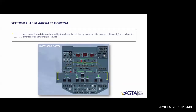Let's look at the overhead panel. By definition, the overhead panel is used during pre-flight to check that all the lights are out. This is the dark cockpit philosophy. For those not familiar with it: no lights in the cockpit means everything is fine. If there is a light in the overhead, it means something is not working as it should be. That's why the dark cockpit philosophy is very nice for pilots - just by having a look at the overhead panel, if you see no lights, everything is normal.